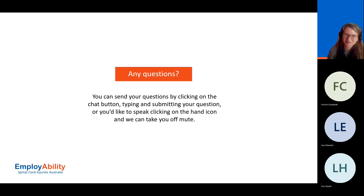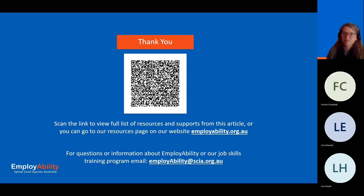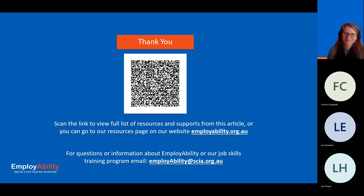I think we've covered quite a bit and as I said, you're quite welcome to always contact us at Employability. We've got a QR code here that will take you to all the information that we have covered, some useful links, etc., so that way you don't have to remember everything. You can also contact us either through our website at employability.org.au or through email at employability@scia.org.au. Thank you, everyone, for joining us.